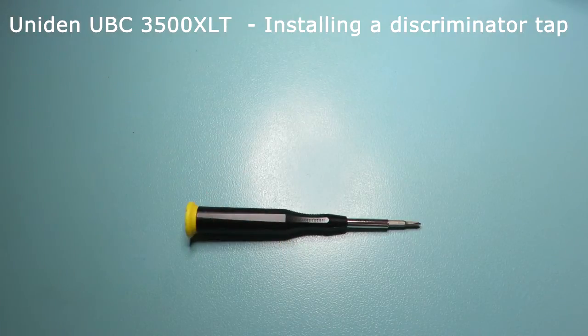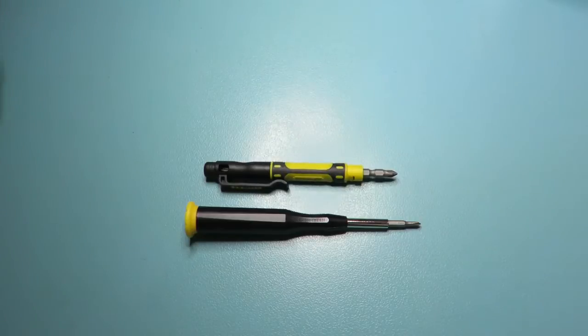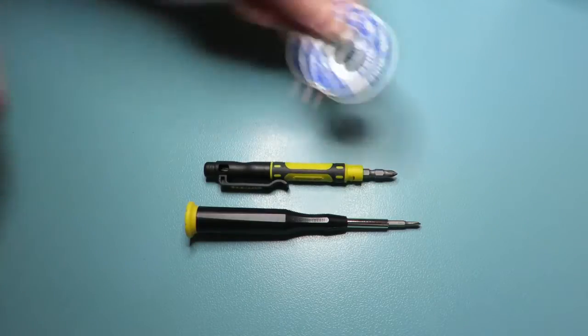This is my video on how to install a discriminator tap on a Uniden scanner. For this job you will need some screwdrivers, some desoldering braid.